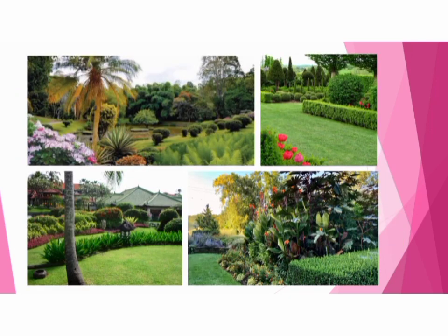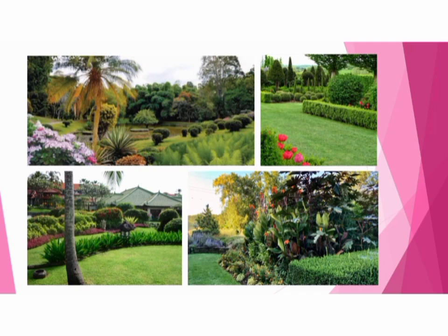Here you can see some pictures. In these pictures there are some plants with flowers and also some plants without flowers. Now it is clear that there are plants which produce flowers and plants which do not produce flowers in our environment. Plants which produce flowers are known as flowering plants, and plants which do not produce flowers are known as non-flowering plants.